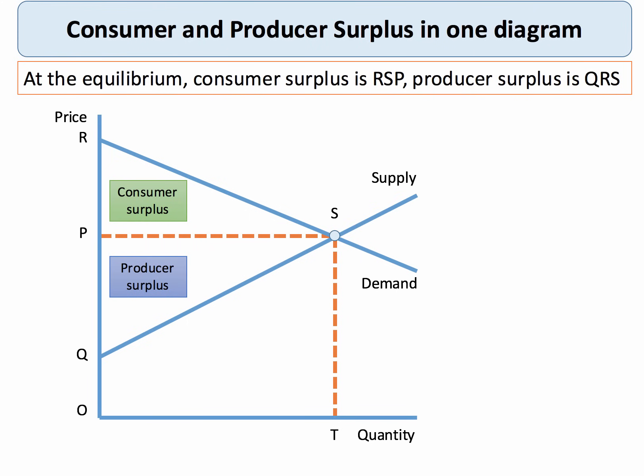Here's a neat way of showing consumer and producer surplus in one diagram. Just a reminder: consumer surplus is the area below the demand curve and above the price; producer surplus is the area above the supply curve and below the price. Taken together, consumer and producer surplus are measures of economic welfare from the production and consumption of goods and services.